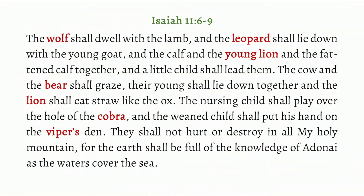But the prophet Isaiah gives us information. In Isaiah 11, verses 6 through 9, also describing the coming kingdom, it says: 'The wolf shall dwell with the lamb and the leopard shall lie down with the young goat. The calf and the young lion and the fattened calf together, and the little child shall lead them. The cow and the bear shall graze; their young shall lie down together, and the lion shall eat straw like the ox. The nursing child shall play over the hole of the cobra, and the weaned child shall put his hand on the viper's den. They shall not hurt' — and that word for 'hurt' is the word ra'ah, the same root as chaya ra'ah — 'they shall not hurt or destroy in all my holy mountain, for the earth shall be full of the knowledge of Adonai as the waters cover the sea.'